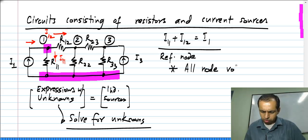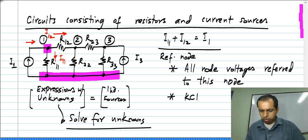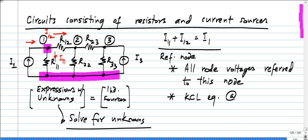All node voltages refer to this node and you do not write the KCL equation at the reference node.